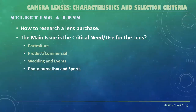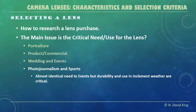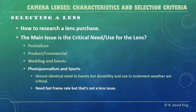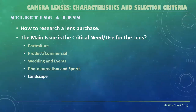How about photojournalism and sports? The truth is, you have an almost identical need as weddings and events, but with a couple of additions. Durability really becomes important because you're going to be abusing those lenses and cameras as you carry them around. You very likely will be in inclement weather, so the lens needs to be able to deal with that. You also need a fast frame rate — but that's a camera body issue, not a lens issue.